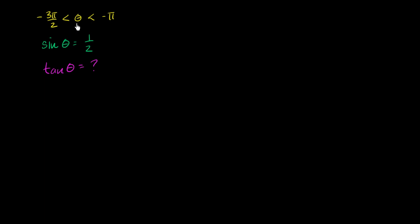Let's say that we're told that some angle theta, which is going to be expressed in radians, is between negative 3 pi over 2 and negative pi — it's greater than negative 3 pi over 2, and it's less than negative pi. We're also told that sine of theta is equal to 1 half. Just from this information, can we figure out what the tangent of theta is going to be equal to?